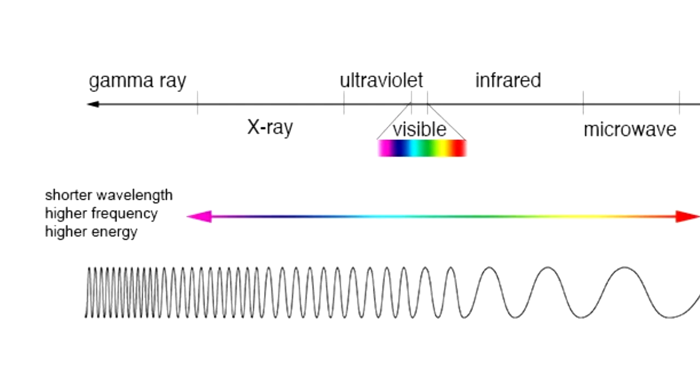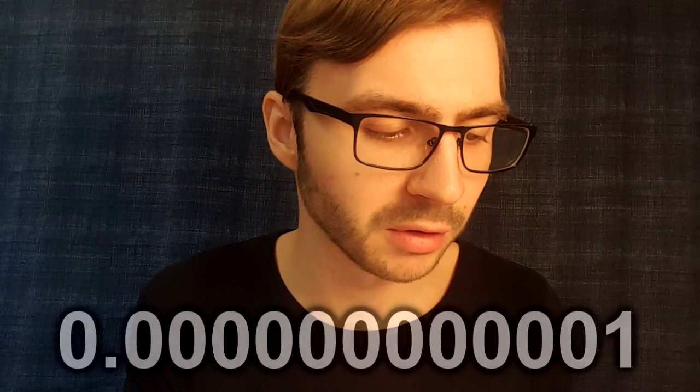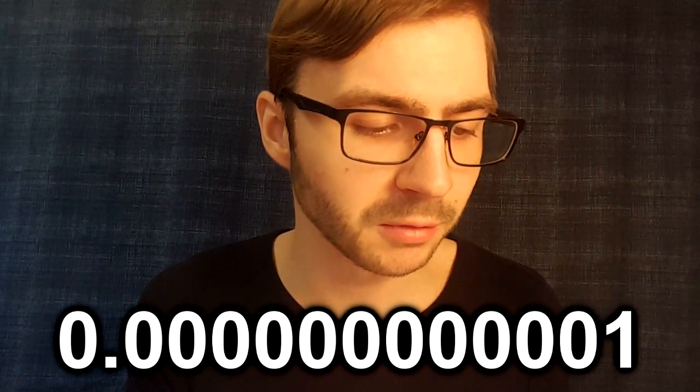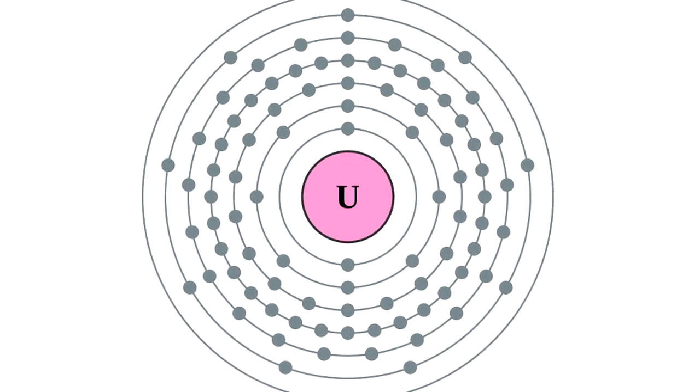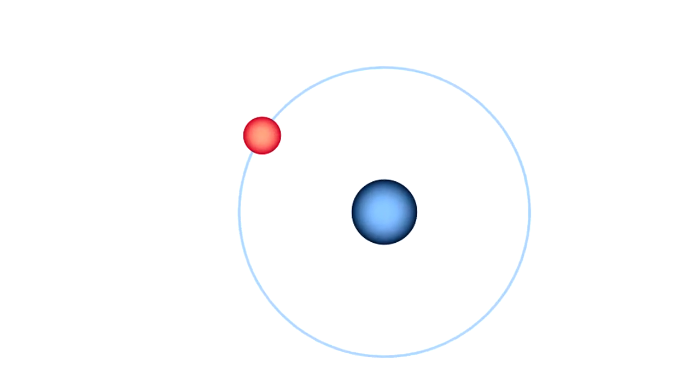At 1 picometer we have gamma rays, the most energetic and powerful part of the electromagnetic spectrum in our universe. This is around 0.00000001 meters. At around 15 femtometers we have the uranium atom. At around 5 femtometers we have the electron, in classical terms of looking at it like a particle instead of a wave.